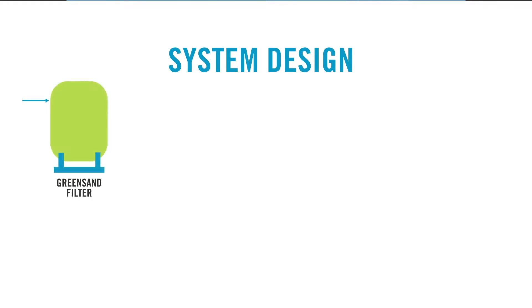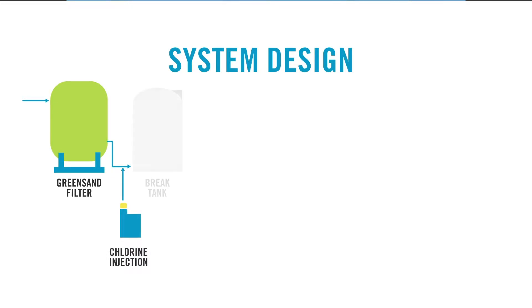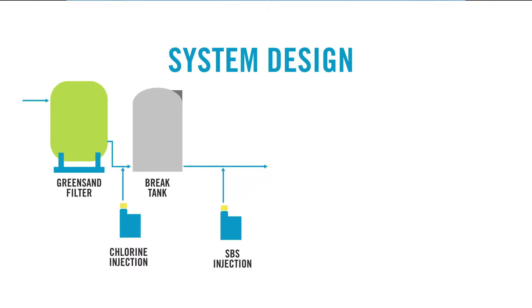Now we'll focus on the system design. The water from the well first entered a green sand filter for the removal of metals. After the green sand filter, there was a chlorine injection which combated the biofouling that the site had experienced in their break tank. After the break tank, there was an SBS injection to reduce the chlorine, protecting the RO from oxidation damage. After this was a cartridge filter, an anti-scalant injection to prevent scaling of the RO, then the high pressure pump which fed the RO system.